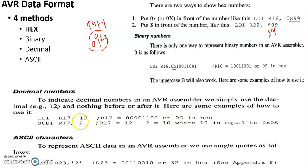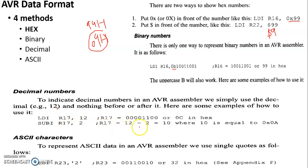For example, 12 in decimal is the same as 0x0C in hexadecimal. Using SUBI — subtract immediate — to subtract 2 from R17 which contains decimal 12 gives 10, and R17 will then contain the decimal result 10, stored in hexadecimal.